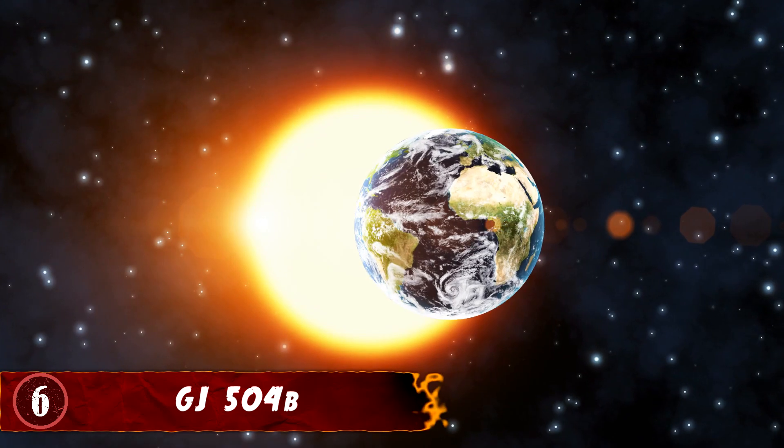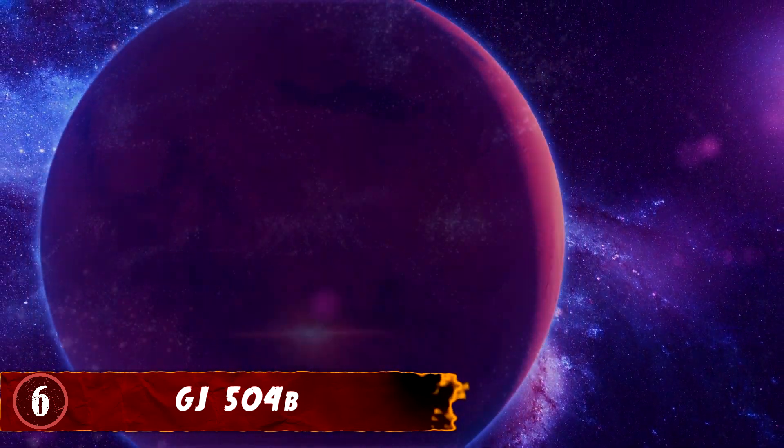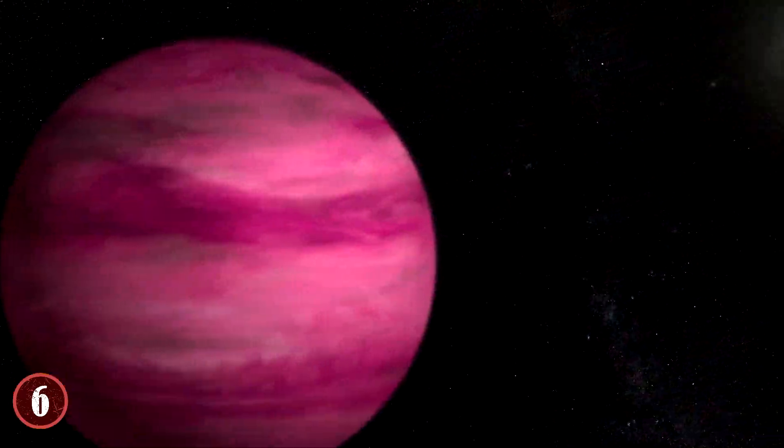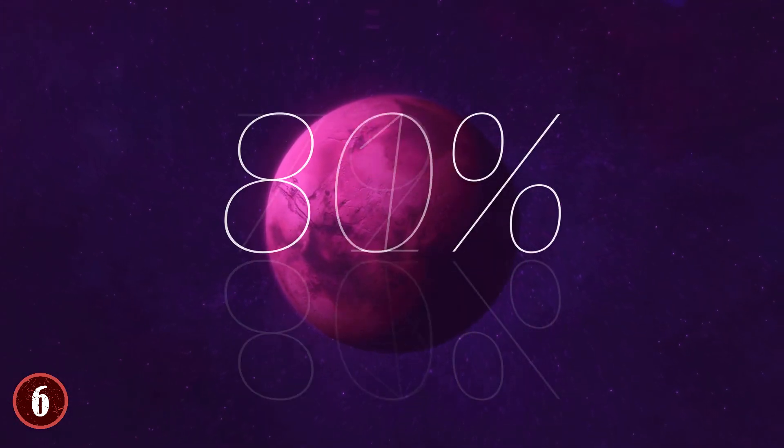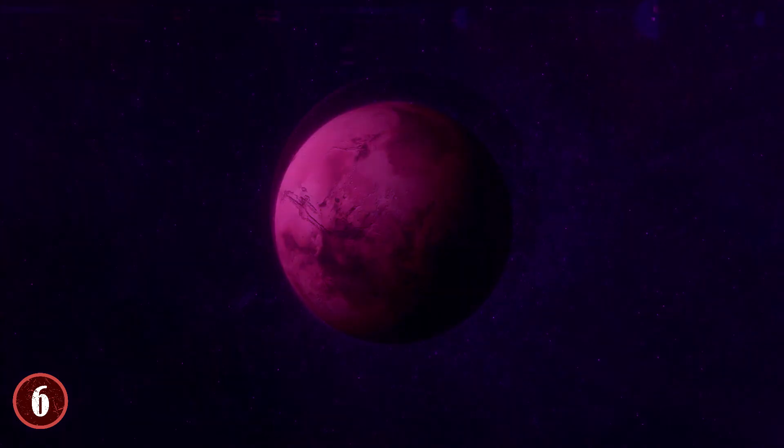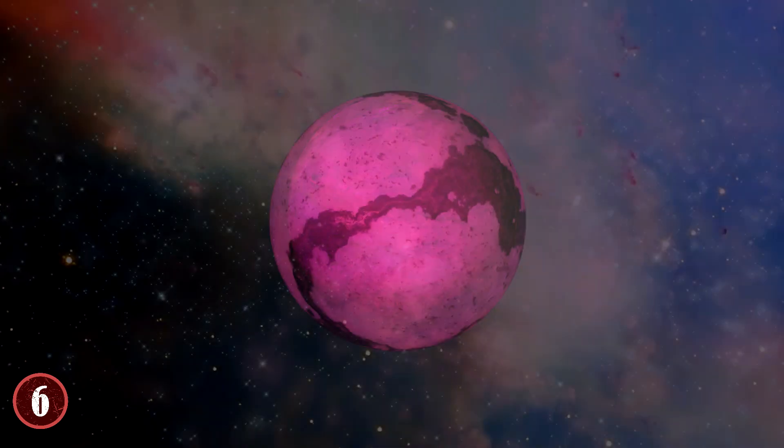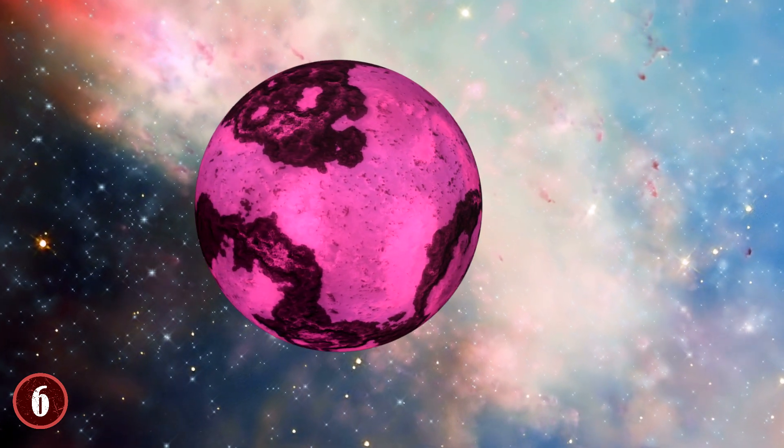Number 6: GJ504b. Planets are known to be many different colors. But can you think of one that is a solid shade of pink? If you were to head 57.3 light-years away from Earth, you would find a planet called GJ504b, and it's in fact a planet that is 100% pink, or to be more colorfully accurate, a shade of magenta.